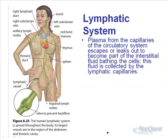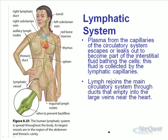Here we start with a general overview of the lymphatic system. In many ways, it looks like the circulatory system, and that's because one of its functions is to return fluid back to our circulatory system. We've talked about how plasma from the capillaries is pushed out into the interstitial cells by blood pressure. A lot of that fluid comes back in through osmotic pressure, but some of it doesn't. Some of it's collected by lymph vessels, and those lymph vessels carry that fluid and dump it back into our circulatory system. The lymph rejoins the main circulatory system through ducts that empty near large veins near the heart.